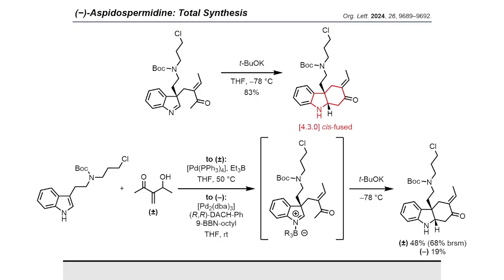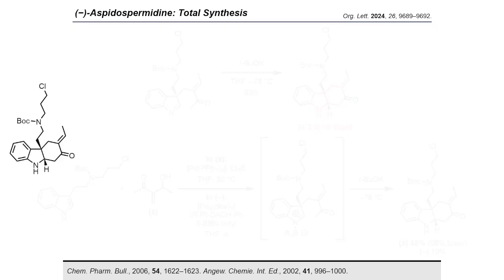With the exoenone in hand, we then proceeded to the double bond migration. The exo- to endo-double bond migration presented a significant challenge, not only due to the lack of literature precedence for such a system, but also due to the lack of a strong thermodynamic driving force. Although stabilization should be obtained upon going from an exocyclic to an endocyclic enone, the migration would occur between two trisubstituted systems.